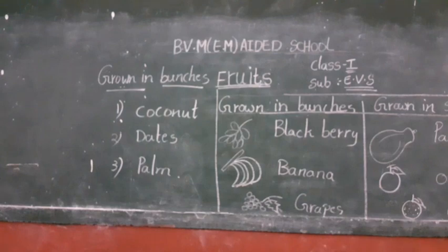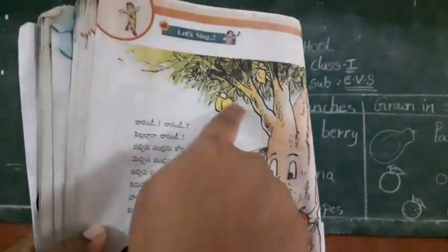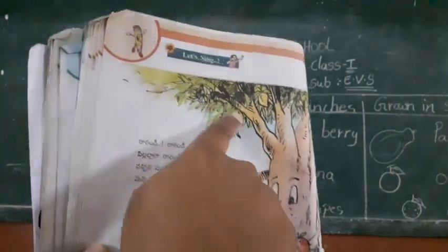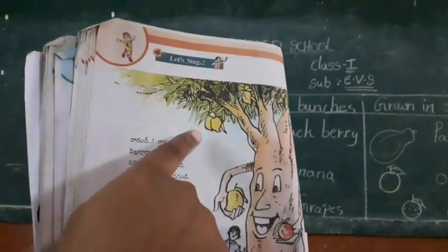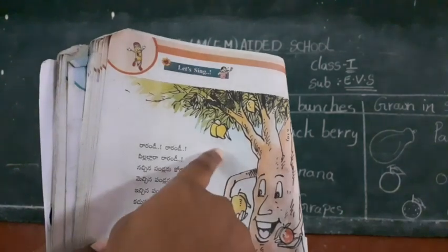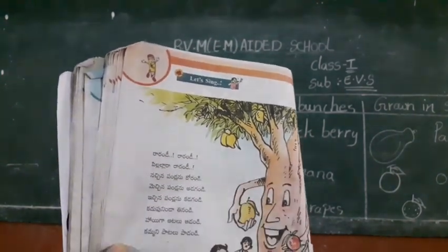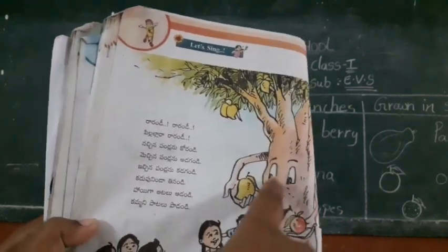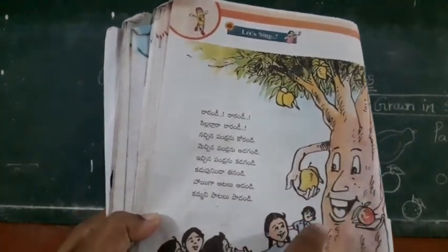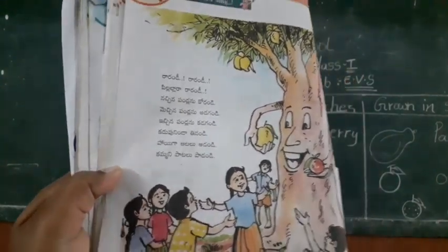Next, in our textbook one rhyme is there. I will read it. First of all, did you find it children, what is it? It's a big tree. Which tree, children? Here are mangoes, so it's a mango tree. Mango tree gives mangoes. Here are some children.